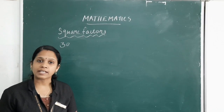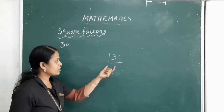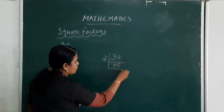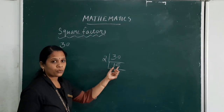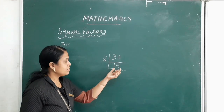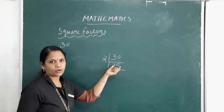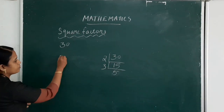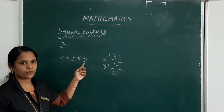How do we write 30 as a product of prime numbers? 30 is divisible by 2, giving 15. 15 is divisible by 3, since 1 plus 5 equals 6, which is a multiple of 3, giving 5. So 30 equals 2 × 3 × 5, and 2, 3, 5 are the prime factors.